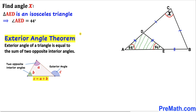Let's recall the exterior angle theorem. According to this theorem, the exterior angle of a triangle is equal to the sum of the two opposite interior angles, as shown in this diagram. Here A and B are our opposite interior angles, whereas C is our exterior angle, such that C equals A plus B.